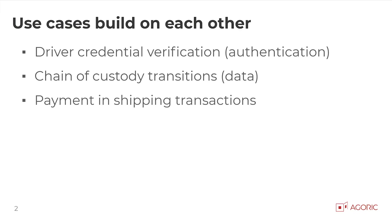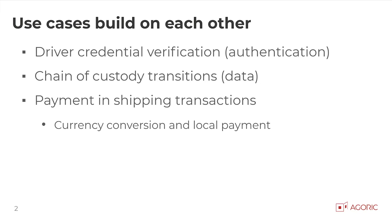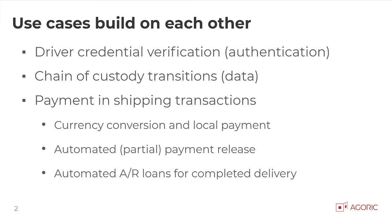Payment for shipping transactions quickly gets into multiple different kinds of payment arrangements — simply paying in local currency so people can get their money out in local currency for international shipments; automated payments so that when custody changes, we automatically issue payment out to recipients, at least partial payment; or accounts receivables loans where I, as a shipper, can take accounts receivables so that I, as a small company, can have cash flow on the order of days rather than months for getting paid.